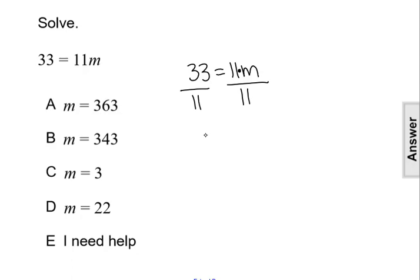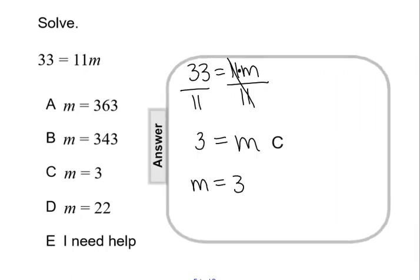So that will leave us with 33 divided by 11 is 3 on the left side and then just the variable m on the right side. So our solution is 3 equals m, or if we switch this side, m equals 3, which is answer choice C.